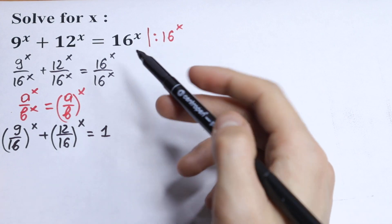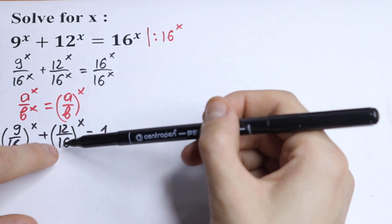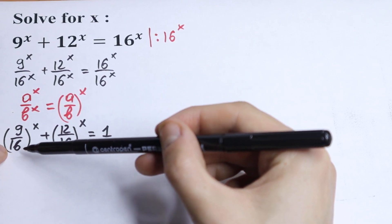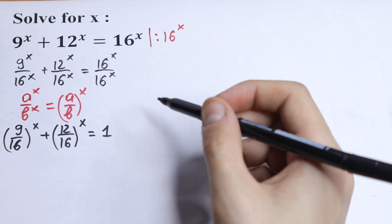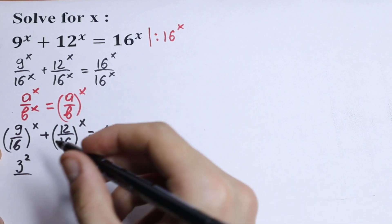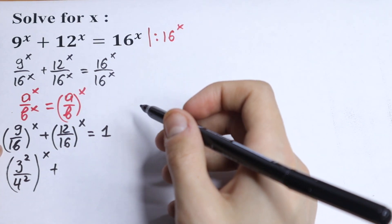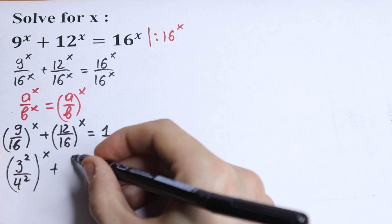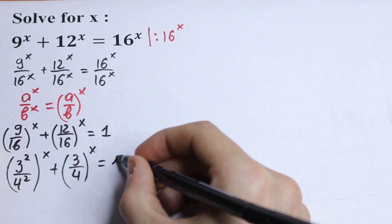I can see that we can divide numerator and denominator by 4, so 12 over 16 becomes 3 over 4. And 9 can be written as 3 squared, while 4 squared stays as is. So we have 3 squared over 4 squared to the power x plus 3 over 4 to the power x equal to 1.